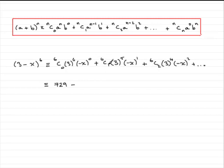Then just need to enter 6C1 into your calculator times 3 to the power 5, and you should find you get 1458. And that will have an x on the end.